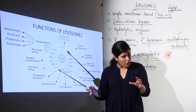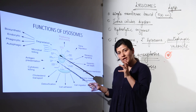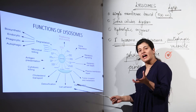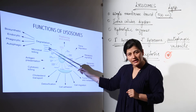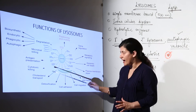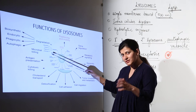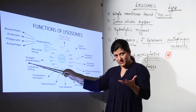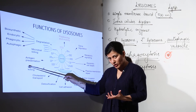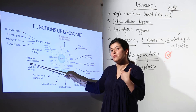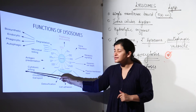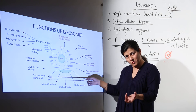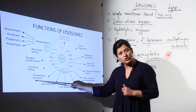The second function is microbial killing: a phagocytic vacuole forms around the microbe, comes in contact with lysosomes, and the microbe is digested. Then there is antigen presentation. There is also an immune mechanism of antigen presentation, where something from outside the body that enters is handled by lysosomes. Cytotoxic killing is another function — cytotoxic substances are taken up and killed. Cholesterol transport is also carried out by lysosomes.